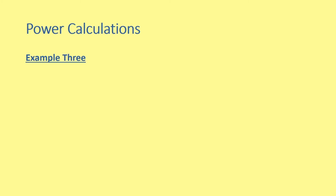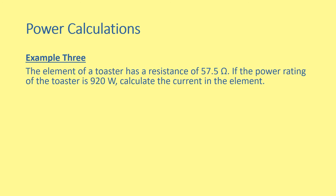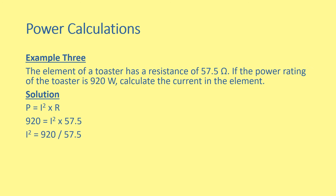In Example 3, we tend to have a little bit of difficulty because we have a squared term for current and current is what we're looking for. The element of a toaster has a resistance of 57.5 ohms. If the power rating of the toaster is 920 watts, calculate the current of the element. Following through the solution: one mark for the equation, one mark for the substitution. Current squared equals 920 divided by 57.5, which equals 16. But that's not the final answer — we don't want current squared, we want current. So we need to square root 16 to get a current of 4 amperes. Just watch out for this one.